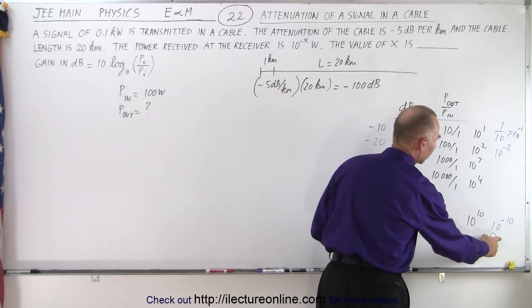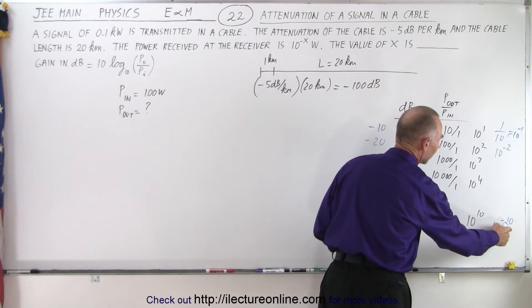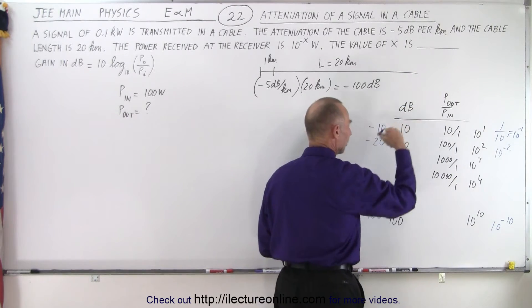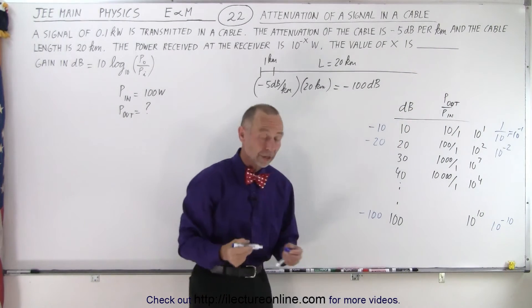So that means the output would be 10^(-10) as big as the input if we have an attenuation of 100 dB.